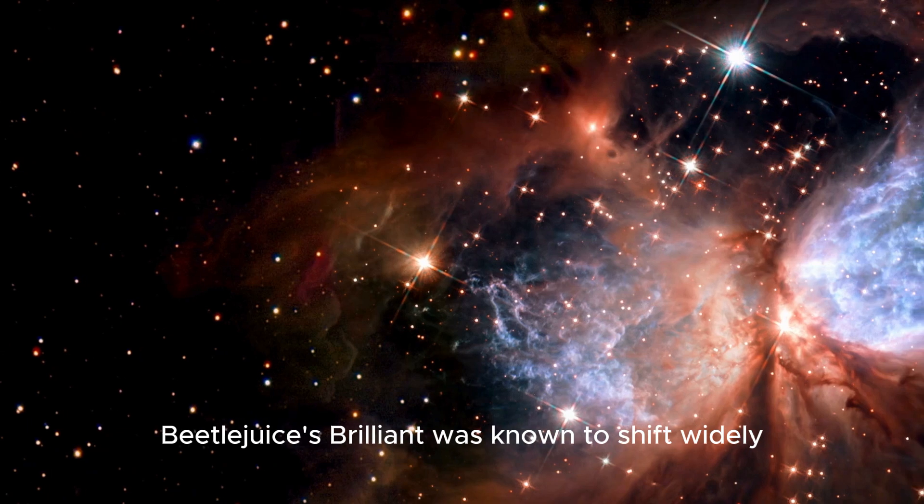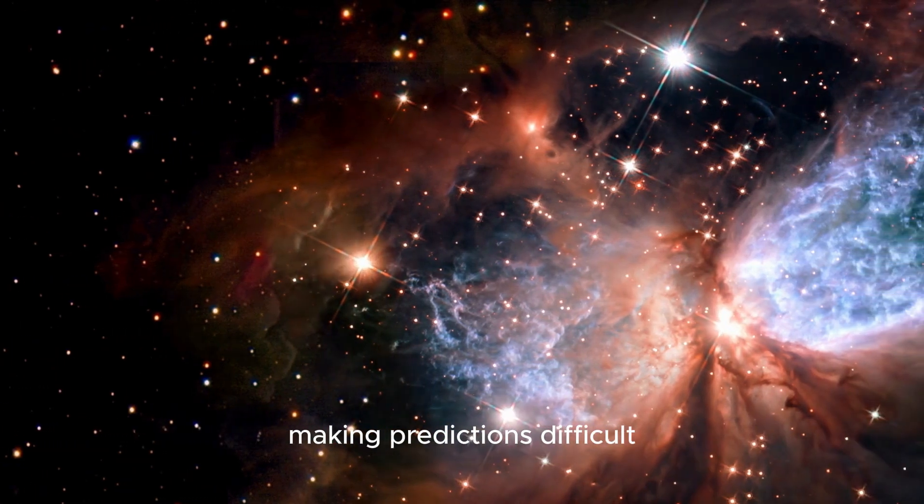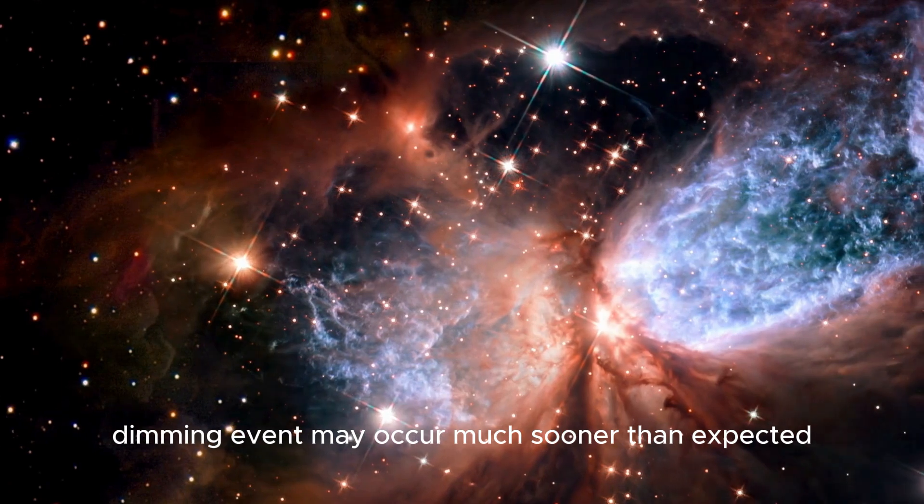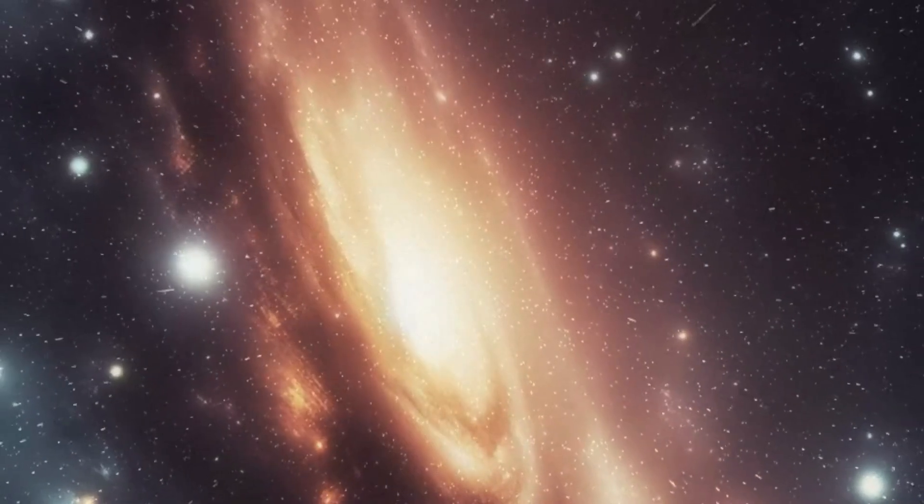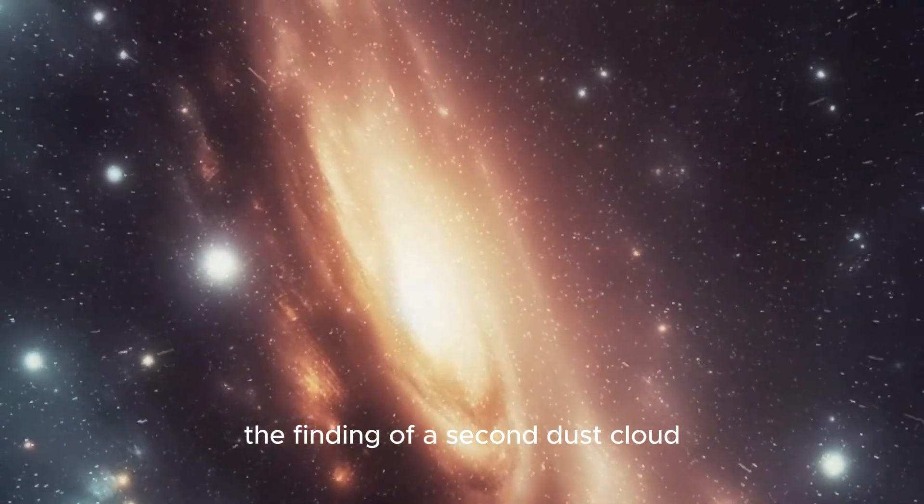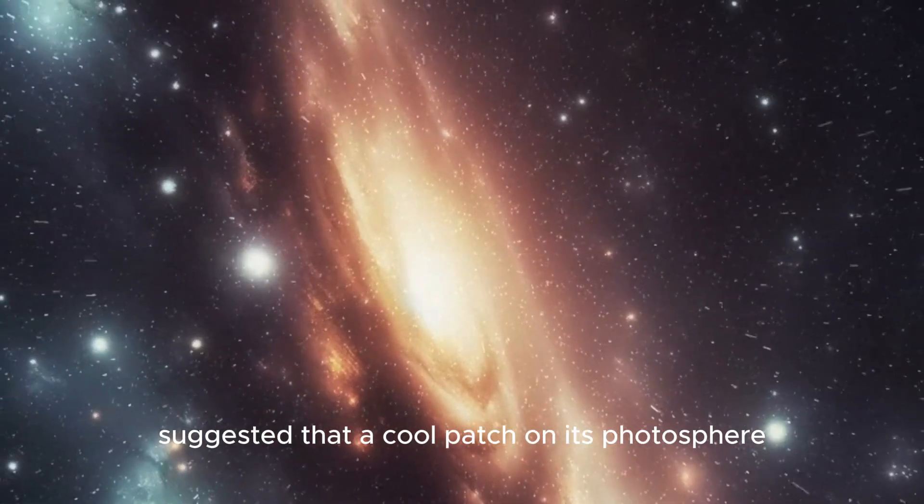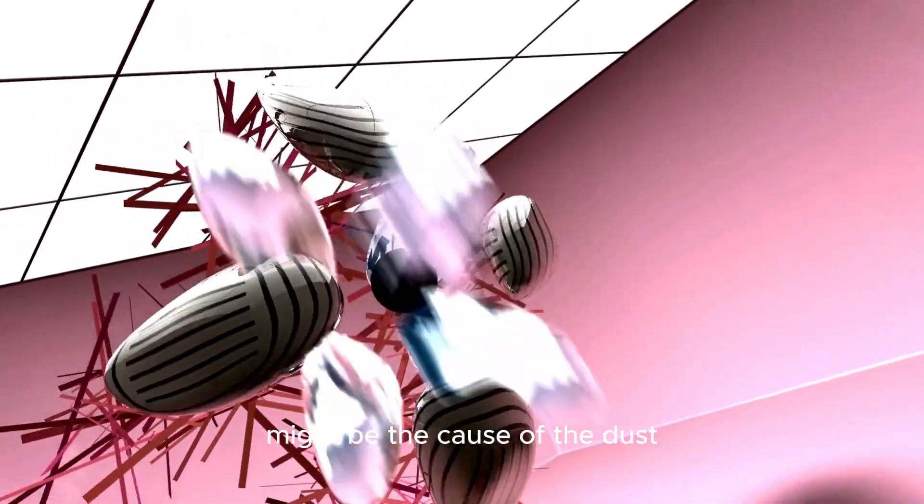Betelgeuse's brilliance was known to shift widely, making predictions difficult. The fading seems to indicate that a second dimming event may occur much sooner than expected. The finding of a second dust cloud coming from Betelgeuse, which was linked in June 2020, suggested that a cool patch on its photosphere might be the cause of the dust.